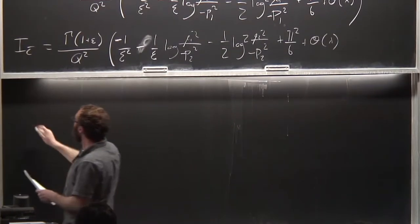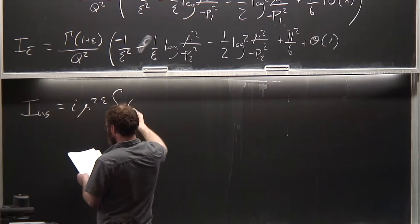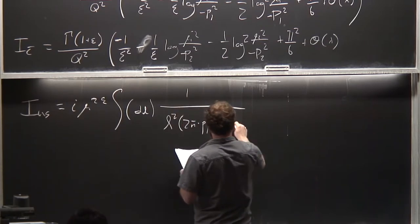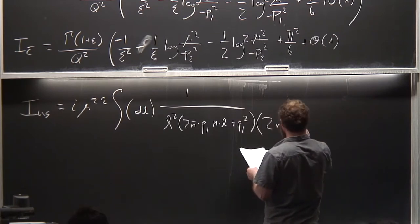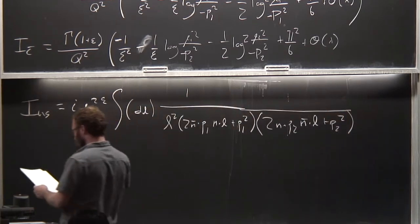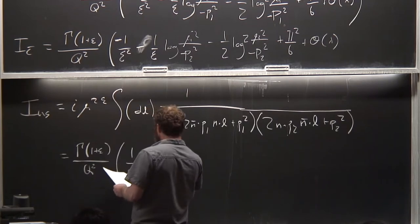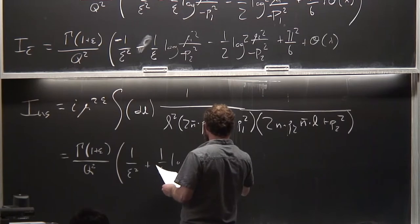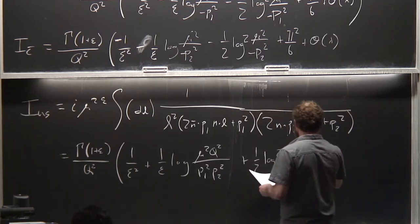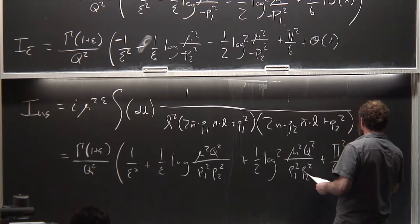Finally, the ultra-soft integral: I_US = mu^{2epsilon} * integral dL * 1/(L^2) * 1/(2 n̄·p1 * n·L + p1^2) * 1/(2 n·p2 * n̄·L + p2^2). That equals Gamma(1+epsilon)/Q^2 * [1/epsilon^2 + (1/epsilon) log(mu^2 Q^2 / (p1^2 p2^2)) + (1/2) log^2(mu^2 Q^2 / (p1^2 p2^2)) + pi^2/6 + O(lambda)].